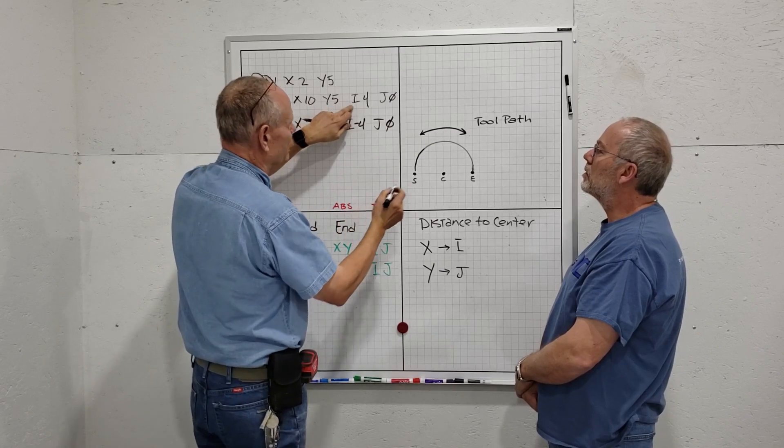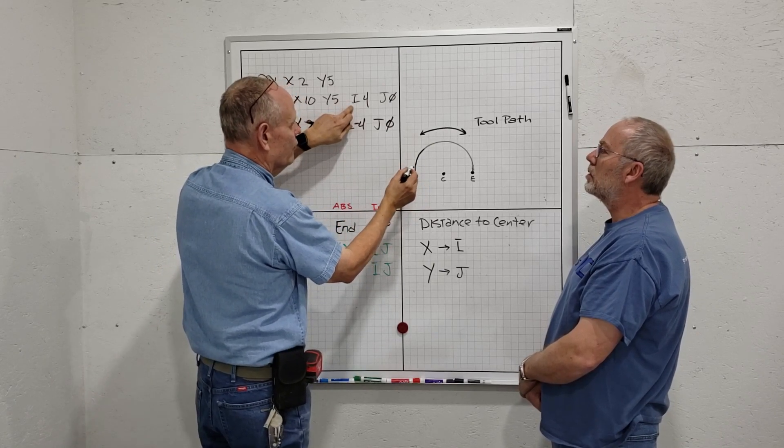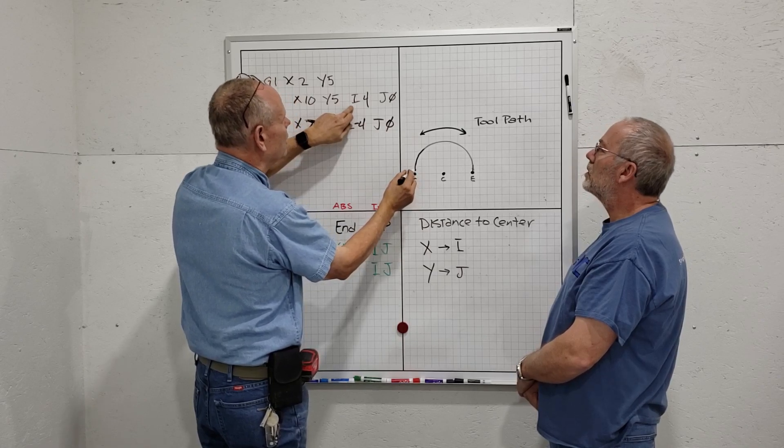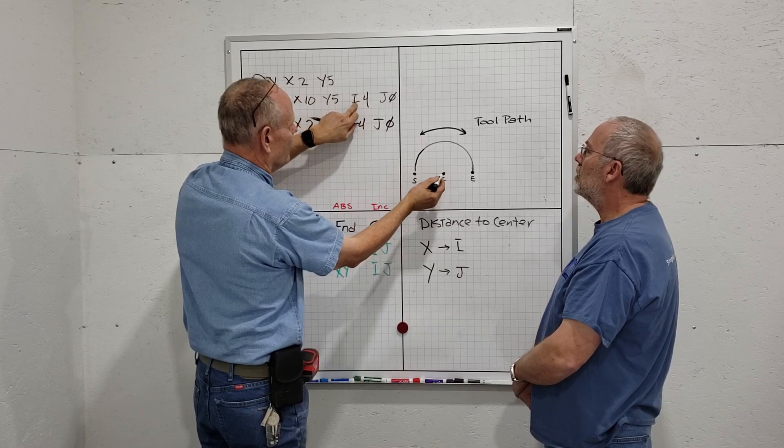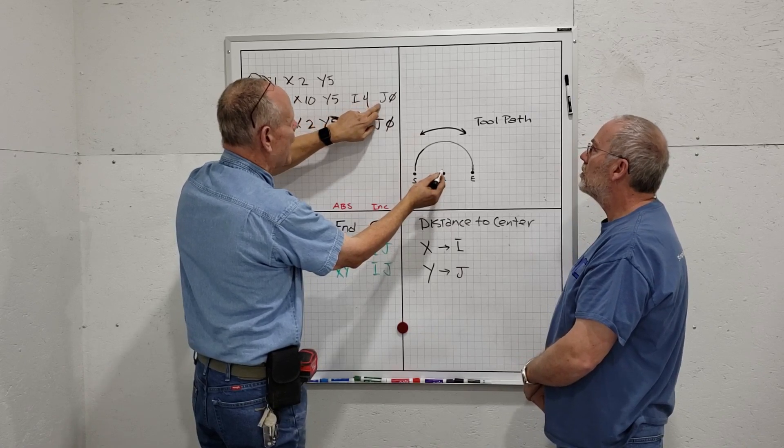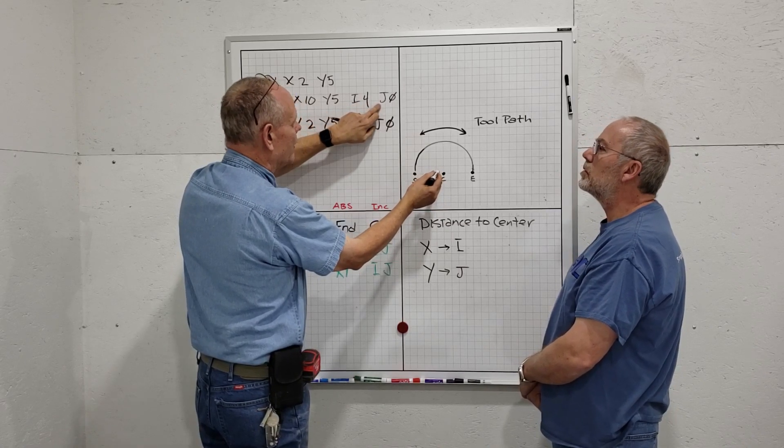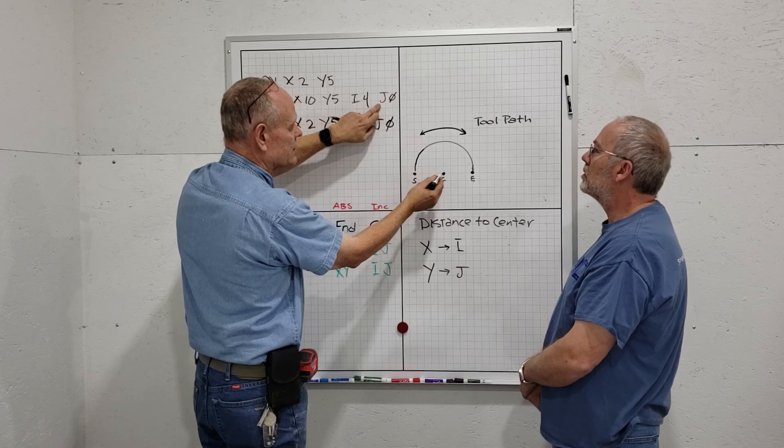From my starting point on the X-axis, I count one, two, three, four points—that's I4. On the Y-axis, I'm not moving up or down from the starting point. Because I'm on the same axis as when I began, my J is zero.